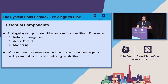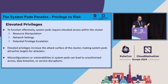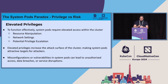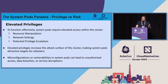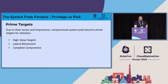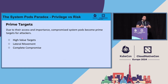The heart of the paradox lies in a fundamental tension: the need for privilege to ensure core functionality versus the inherent security risk associated with those privileges. Without system pods, the cluster would not be able to function properly. The required elevated privileges include resource manipulation — the ability to create, modify, or delete resources — and network settings like configuring pod communication within the cluster. The price of this power is that any misconfiguration in those pods becomes a critical misconfiguration, probably allowing unauthorized access to our cluster, which makes these pods a very high-value target. As an attacker, it's worth spending time to find any security vulnerability in these pods, because they could allow lateral movement and, in the worst case, complete compromise of the cluster.